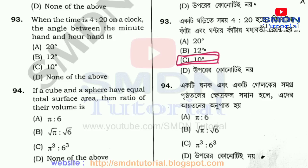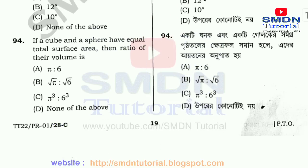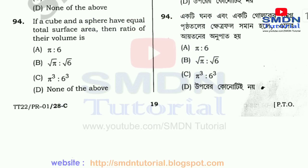So actually reasoning is question 0. Next is 94. This is a repeated question. 94 is b root pi to root c.